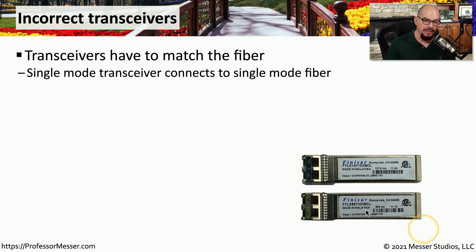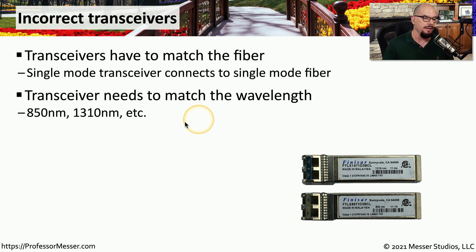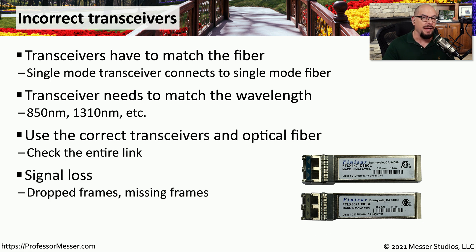If you're using fiber, you may be using a transceiver in your switch or router to connect that fiber into the device. You have to make sure that the transceiver matches the type of fiber you're using — if you're using single-mode fiber, you want a single-mode transceiver. You also have to make sure that the wavelength of the transceiver matches the wavelength being sent over that fiber. So if you're using 850 nanometers, your transceiver must be for 850 nanometers. If you're using transceivers on both sides, they must match; if they don't, you'll have dropped frames, loss of signal, or no signal at all.